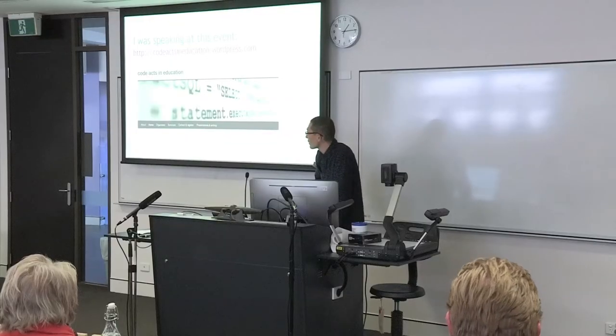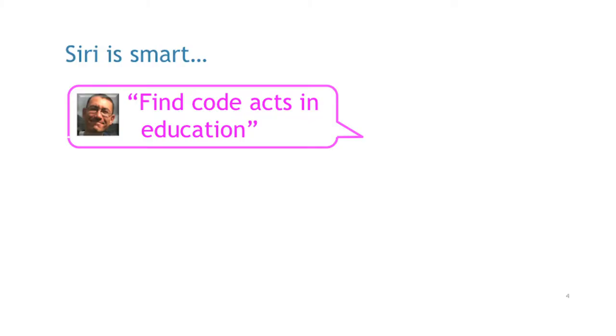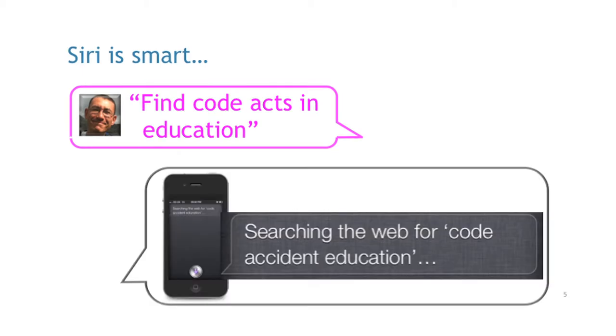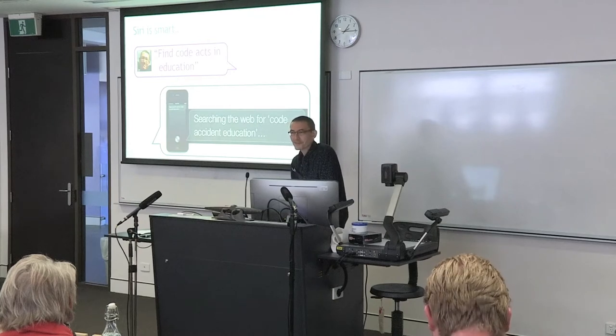I was speaking at this event in Edinburgh a few months ago called Code Acts in Education — I heartily recommend you go there. The slides will be available afterwards, so don't worry if you don't catch the URLs. Code Acts in Education was all about how code is shaping education from quite a sociological, critical stance. They invited me to talk about how learning analytics shape education. So I asked Siri to find me the website for it — and it came back searching the web for "code accident education." I love that. It just summarized for me exactly some of the issues that people are worrying about: algorithms we're increasingly carrying around in our pockets are crunching huge amounts of data. The worry is, are we going to lose something important about learning by surrendering more control to algorithms?